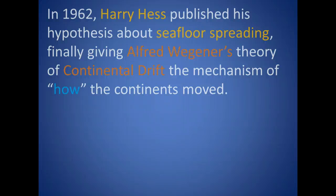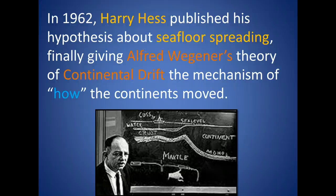For the next 15 years, Hess continued to gather evidence about the ocean floor, how the underwater mountain ranges were formed, and how the ocean floor was different ages. In 1962, Hess published a paper called History of Ocean Basins, which explained how seafloor spreading works and how the continents moved. Finally, Alfred Wegener's theory of continental drift made sense and was accepted, thanks to Hess's explanation of how the continents moved.